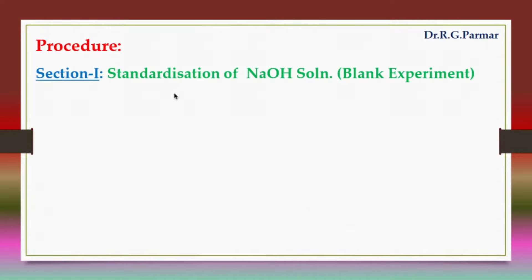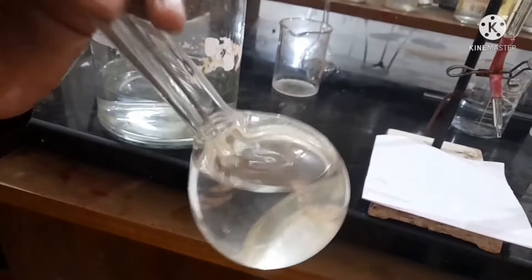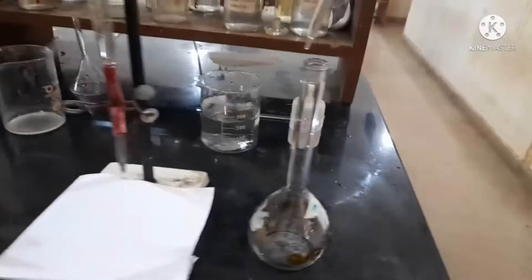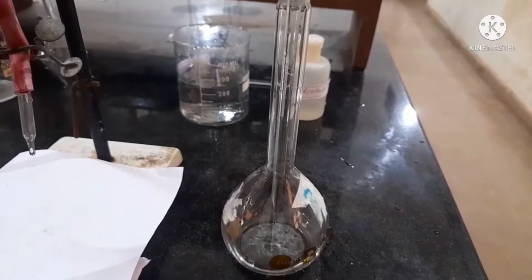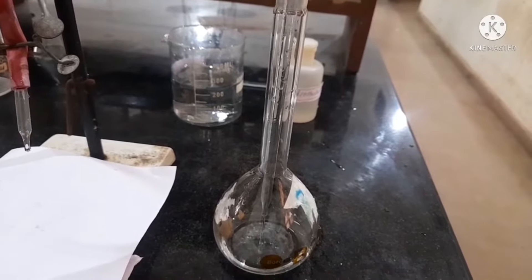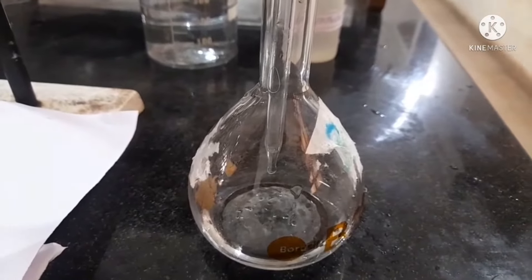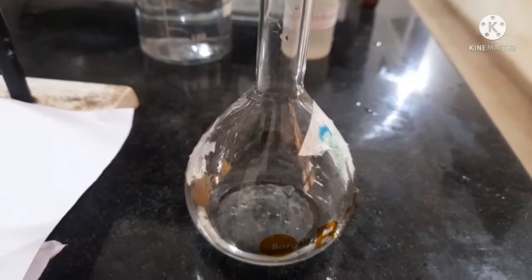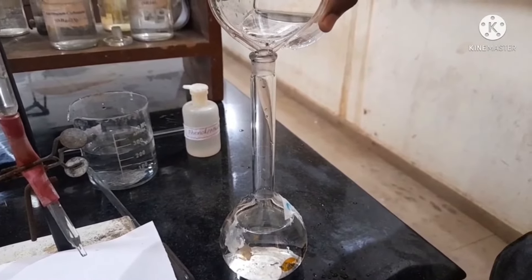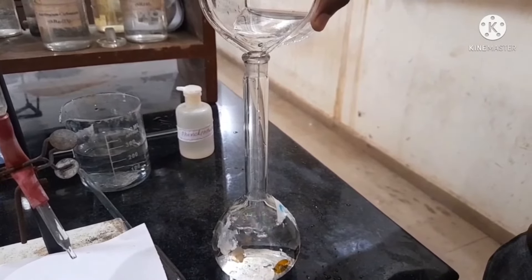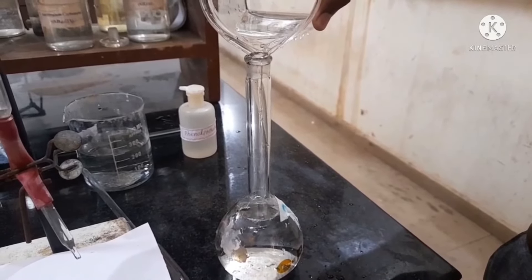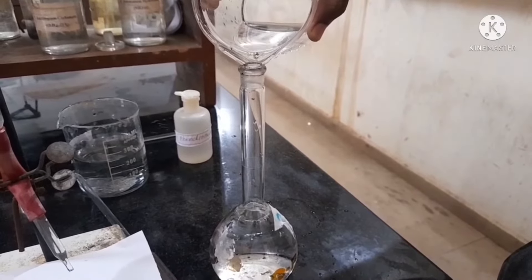In Section 1, we will first perform a blank experiment to standardize NaOH and determine its exact normality, because NaOH is a secondary standard. While acetamide is kept for hydrolysis, we will determine the normality of NaOH. For that, we take 25 ml of 1 normal NaOH solution, transfer it to a 250 ml measuring flask, and dilute it to 250 ml with distilled water up to the mark.